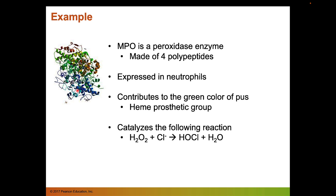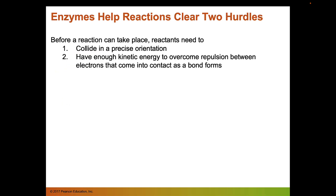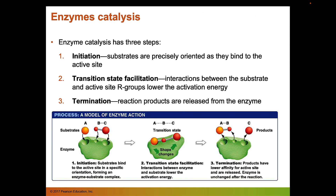For a reaction to take place, reactants or substrates need to collide in a precise orientation, and they need enough kinetic energy to overcome the repulsion between electrons and atoms as they form bonds. Enzymes help reactions clear these two hurdles. Enzyme catalysis has three steps: initiation, transition state facilitation, and termination. In initiation, substrates are precisely oriented to bind into the active site. In termination, products are formed and released, and the enzyme can be reused.